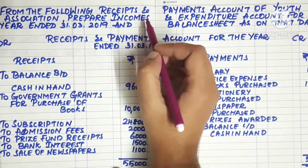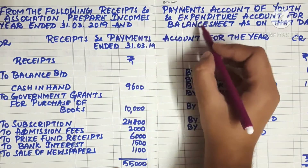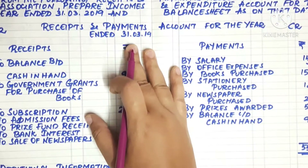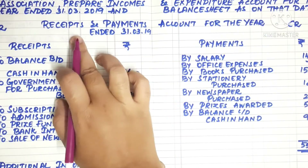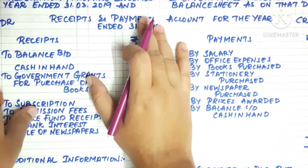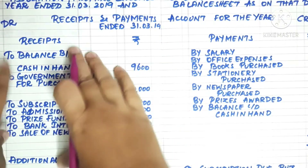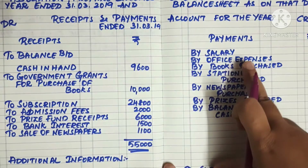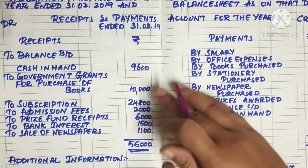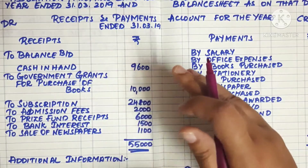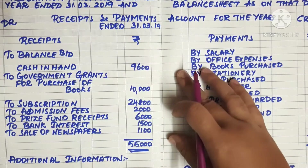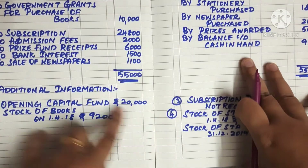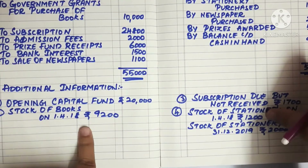What do we do? We prepare the income and expenditure account and the balance sheet. As usual, we have the debit side and credit side for receipts and payments. One by one, we will tell you where each item goes. I will show you a few key points. Additional information includes the opening fund.